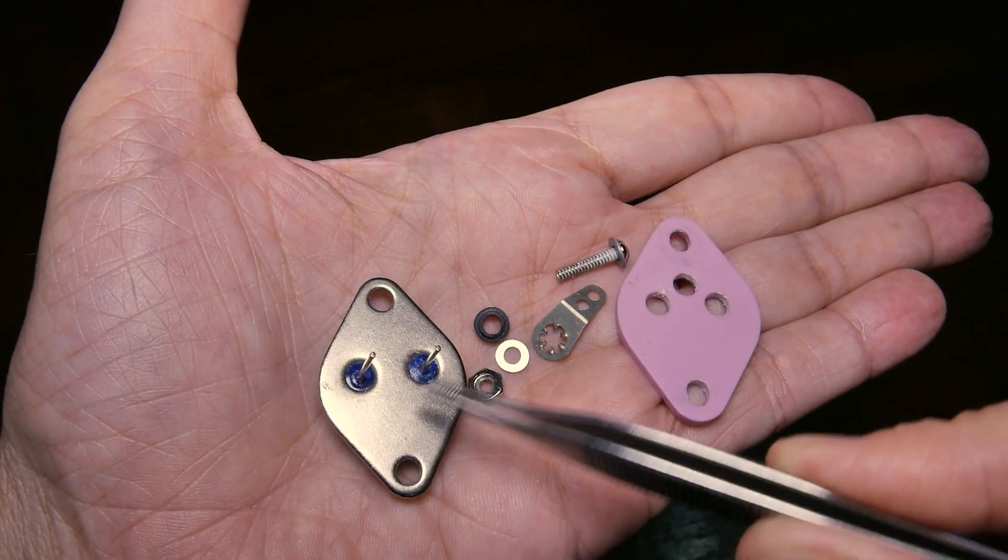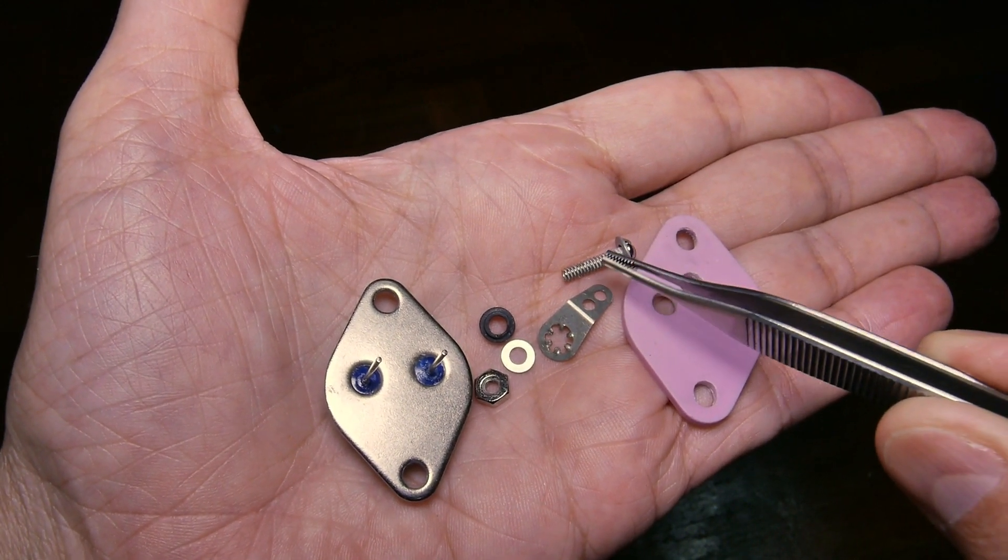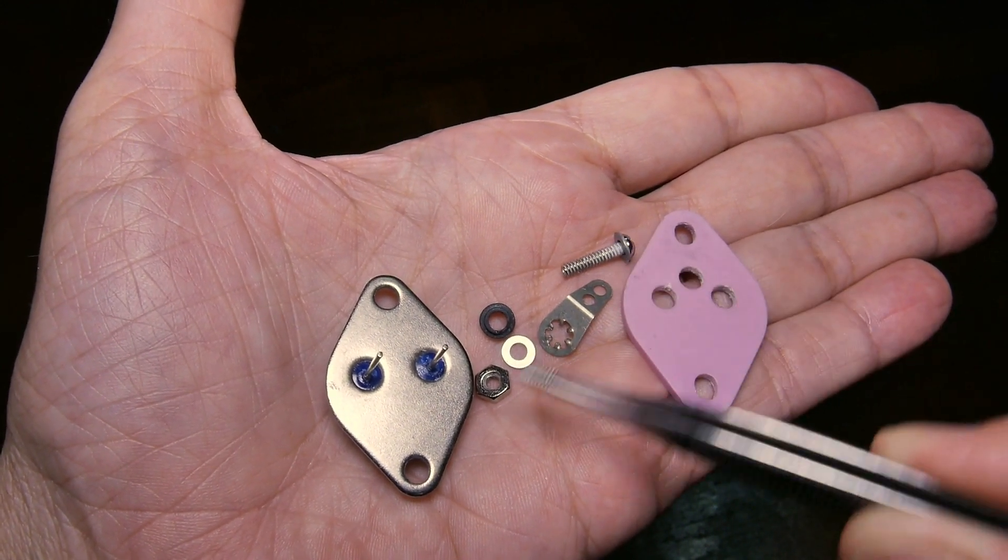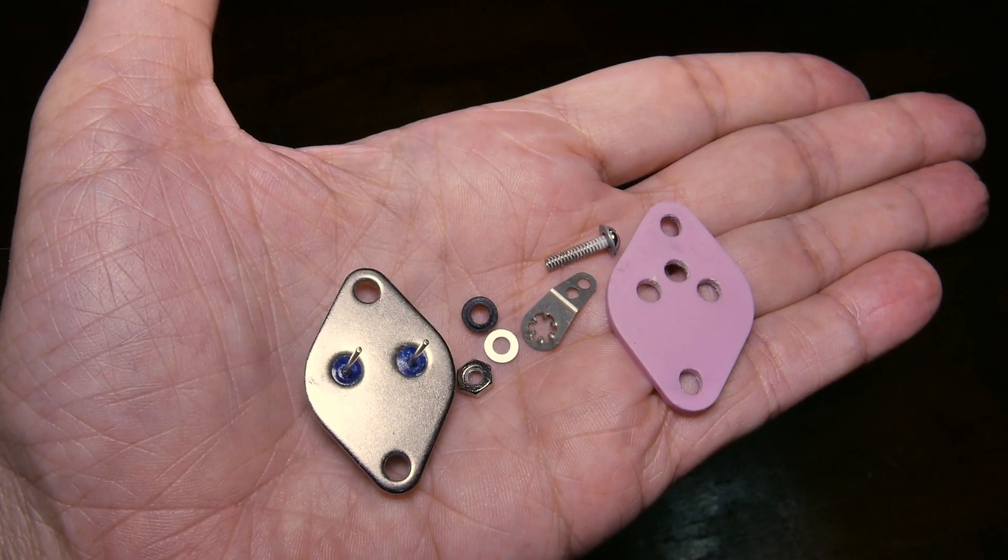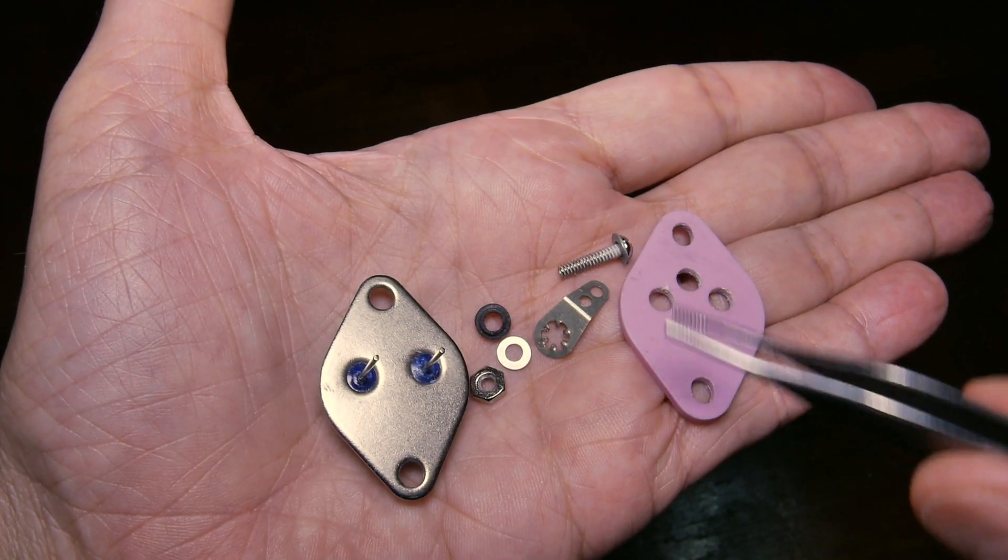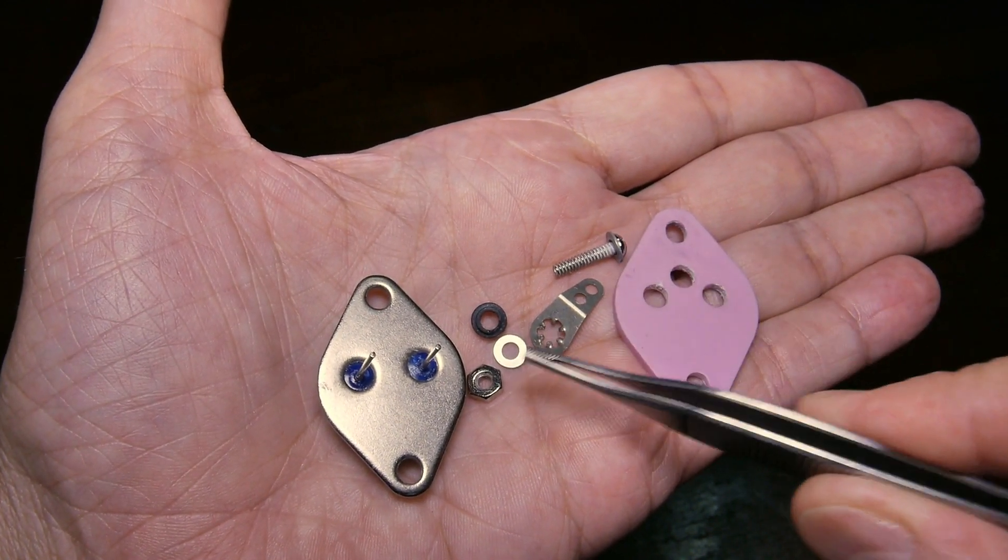These are the components we're going to assemble. So this is the TO3 package, the insulator. And then this is one side of the mounting hardware that will go through one of these holes. Let's do a close up on that so you can see the correct sequencing on assembling these components right here.